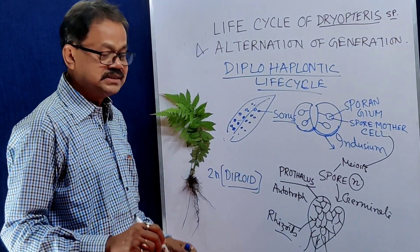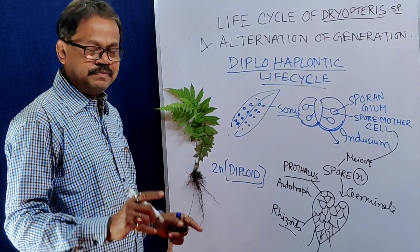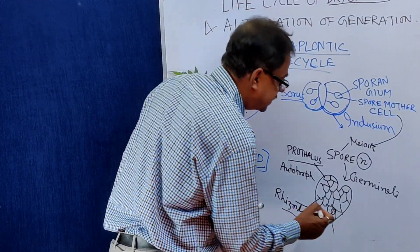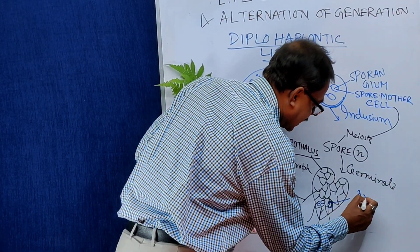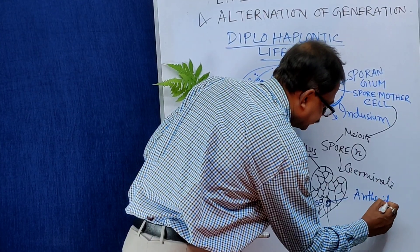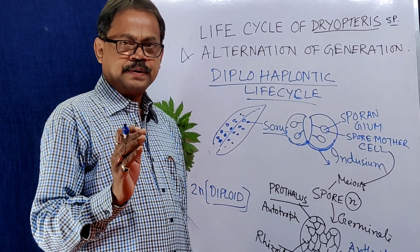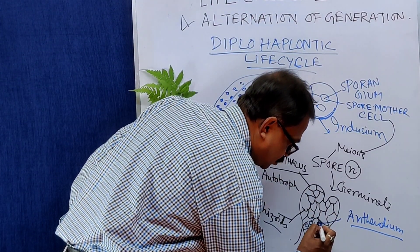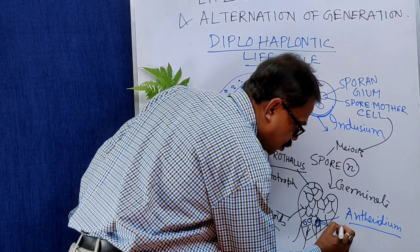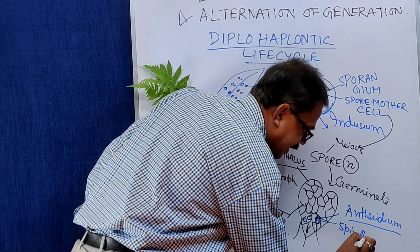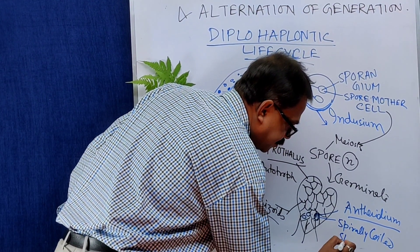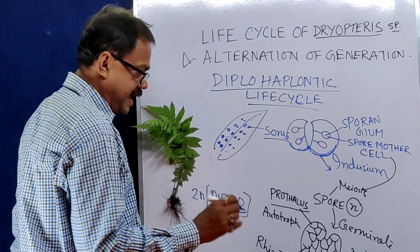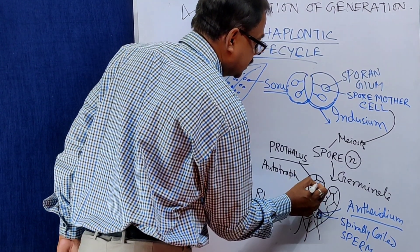This prothallus has two sex organs: one is the male sex organ and another is the female sex organ. The male sex organs present here are called antheridia. The antheridium is the male reproductive part which has 32 sperm mother cells. These 32 sperm mother cells produce 32 spirally coiled, multiflagellate sperms.